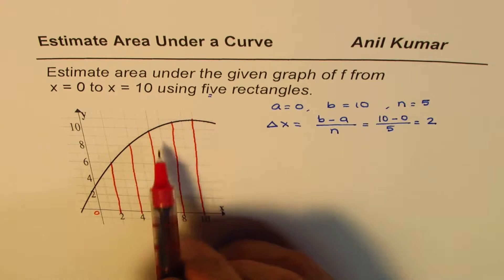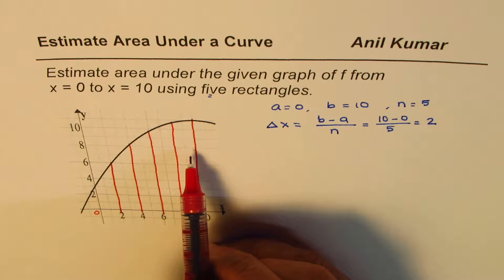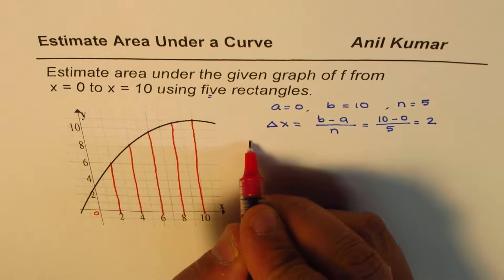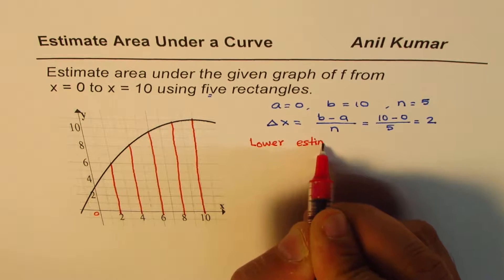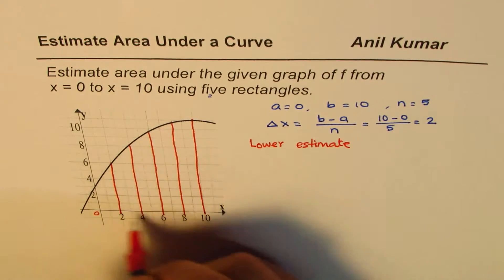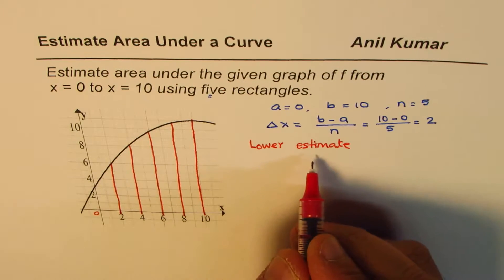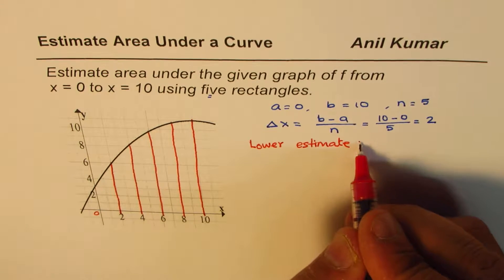When estimating the area, we can use left end points or right end points. If we take the left end point of each rectangle, we get the lower estimate. Since the curve is concave down, using left end points gives us the lower estimate.